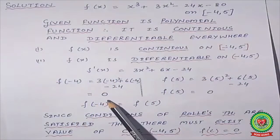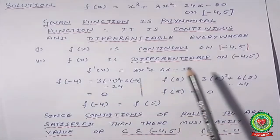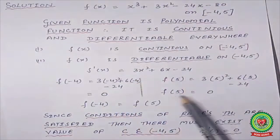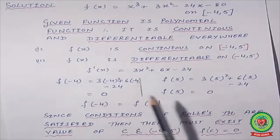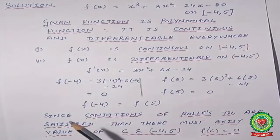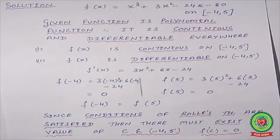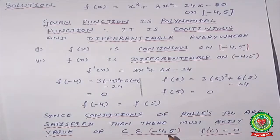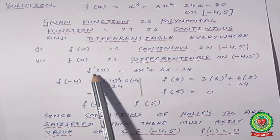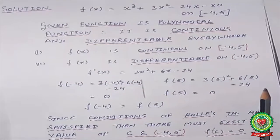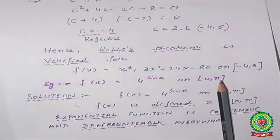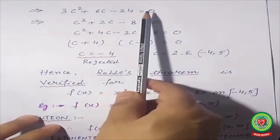Now we put the endpoint values. We put x = −4 in the given function and get the answer 0. Then we put x = 5 in the given function and the answer is again 0. These two answers are the same, so the third condition is also satisfied. Since all conditions are satisfied, Rolle's Theorem is applicable. There must exist at least one value c belonging to the open interval (−4, 5) such that f′(c) = 0.